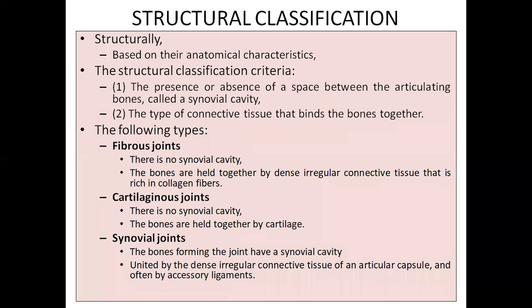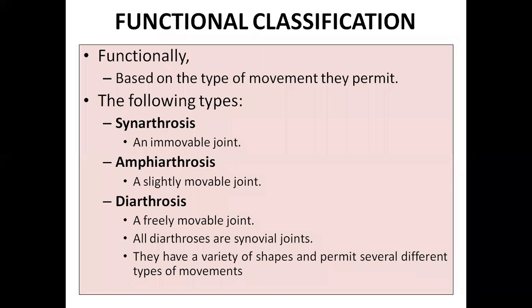The next type of classification is functional classification. In the functional classification, again three types are there, based upon the movement. If there is a joint between two bones, whether they are able to move or not. If they are able to move, how much. One is called synarthrosis - that is an immovable joint.